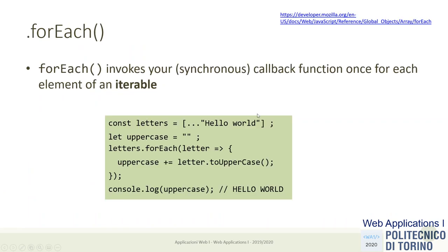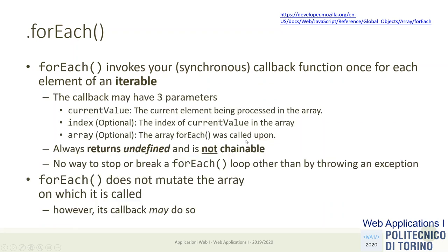forEach is the simplest one conceptually. It takes an array — and it works on many iterable objects — and it receives a callback. For example, it takes each element of the array and applies the function to it, running the function with that element as a parameter. Inside this callback function you can do whatever you want. The function will be called once per every element in the array. It's a sort of an implicit loop, where instead of specifying the body of a for loop, you specify a callback function to be executed for every iteration. This callback is called synchronously.